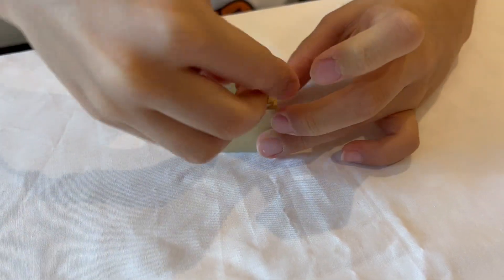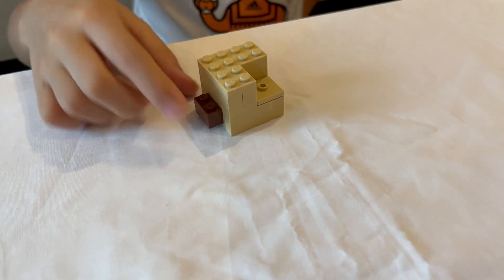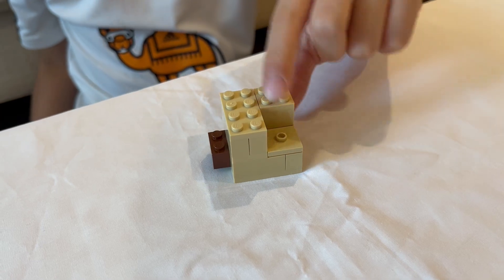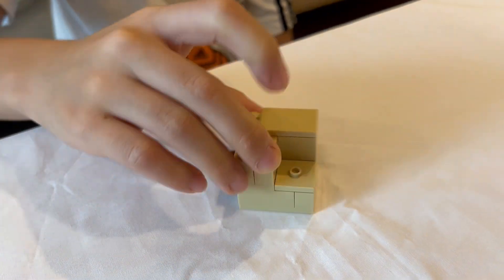So then we need to take these plates, put it on top, and then that's the main structure done. Now we need to tile them off. So over here is already tiled off, so we need to tile off the top.